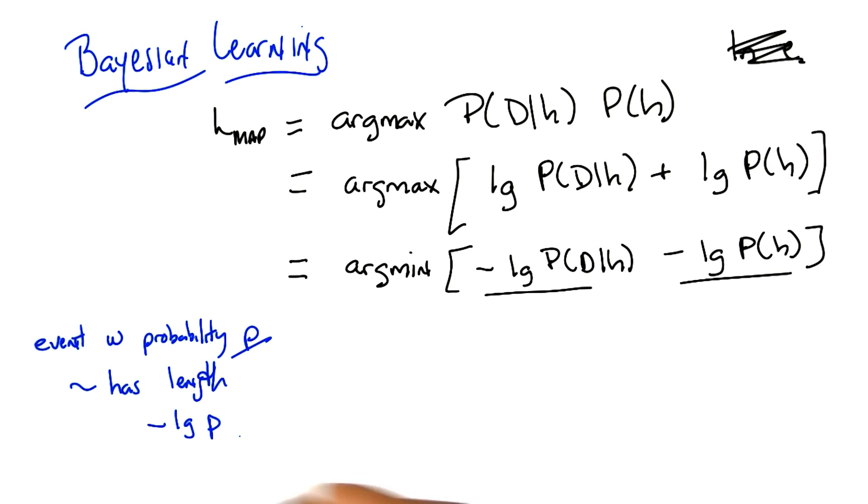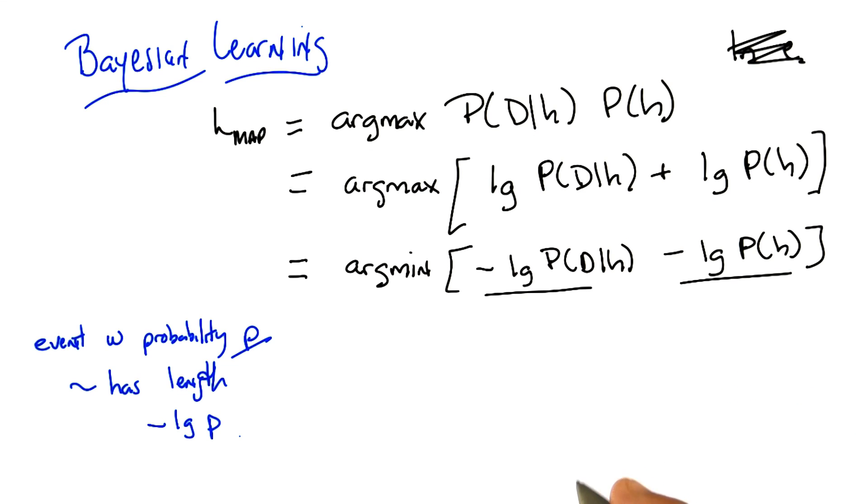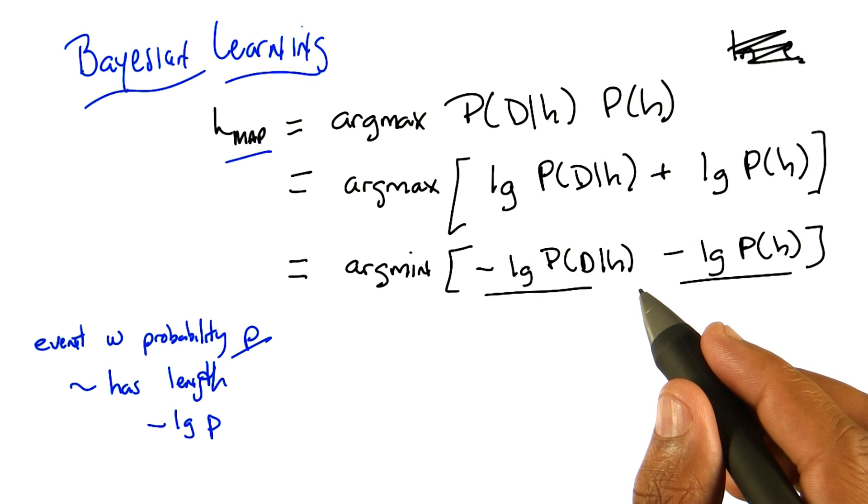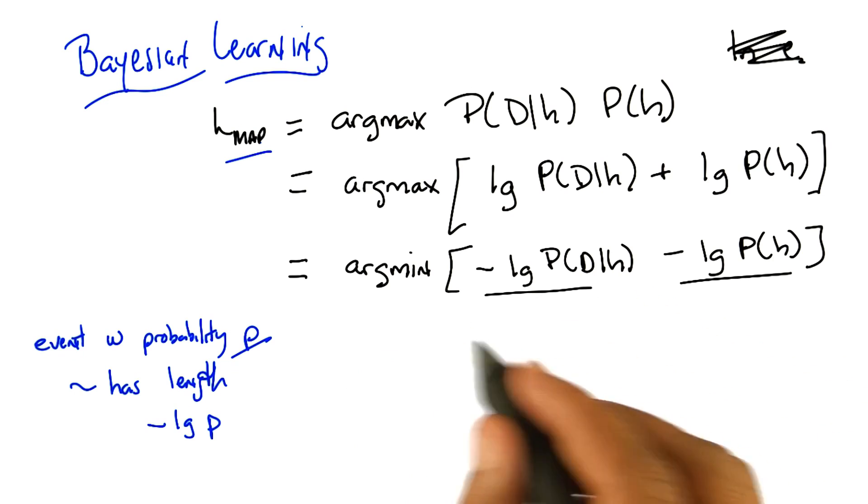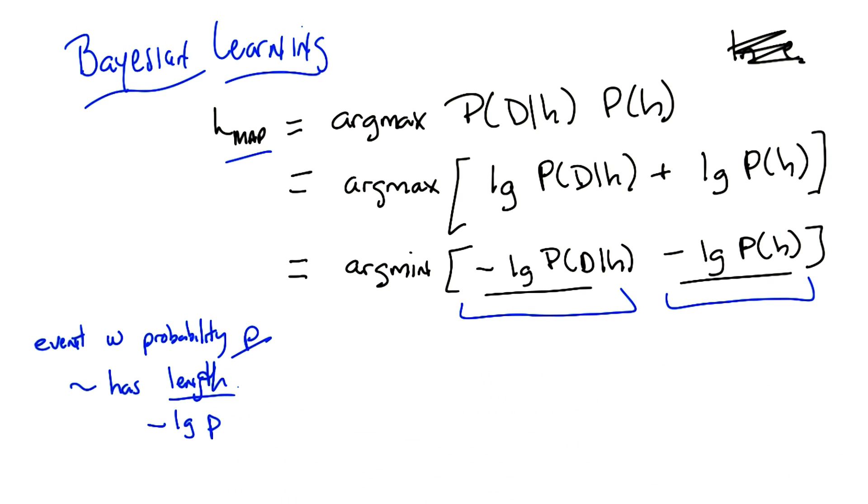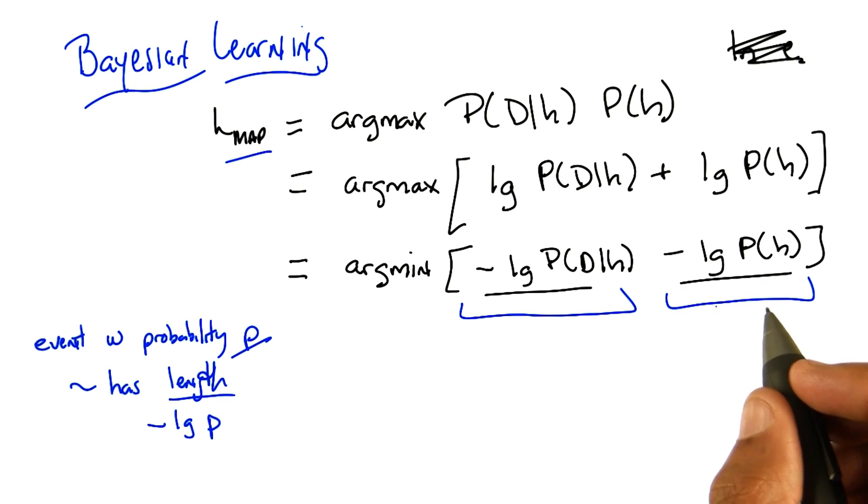So if we take this fact that we know and we apply it to here, what is this actually saying? This is saying that in order to find the maximum a posteriori hypothesis, we want to somehow minimize two terms that can be described as links. Okay, I see that. Okay. So my question to you is, given that this definition over here, that an event with probability P has some length minus log P, what is this the length of? So that would be the length of the probability of the data given the hypothesis. And the length of the hypothesis, or the probability of the hypothesis.